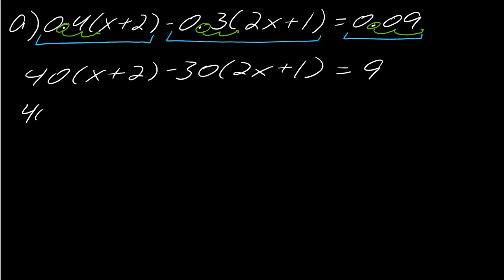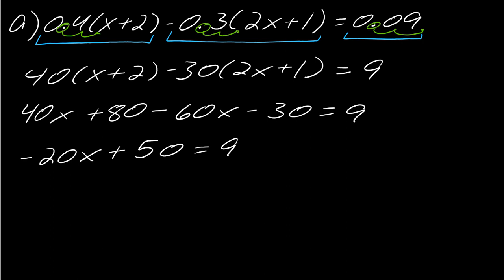So this is going to be, I have to distribute first, so I've got to take 40x plus 80 minus 60x minus 30, and that equals 9. And then I can collect my like terms to get negative 20x plus 50 equals 9.